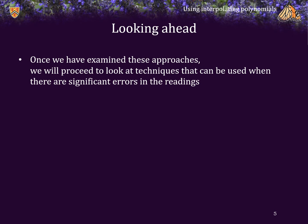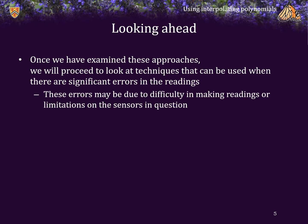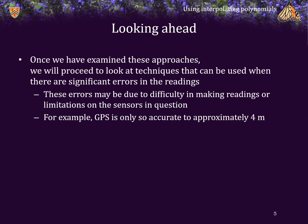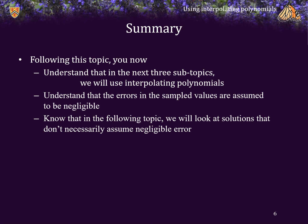Once we've looked at these approaches, we will proceed to look at techniques that allow us to make such estimations when there are significant errors in the readings, and for this we are going to use linear regression. These errors may be caused by numerous things: environmental factors or perhaps limitations on the sensors making the readings. For example, GPS is only accurate to about 4 meters, and when designing your device you will be asking yourself what is the least expensive sensor you can use while still achieving the constraints imposed on the design by the client.